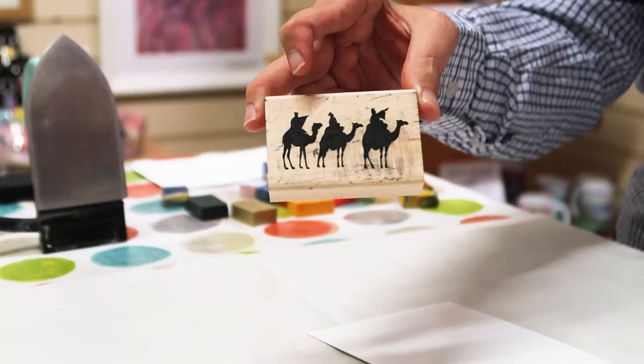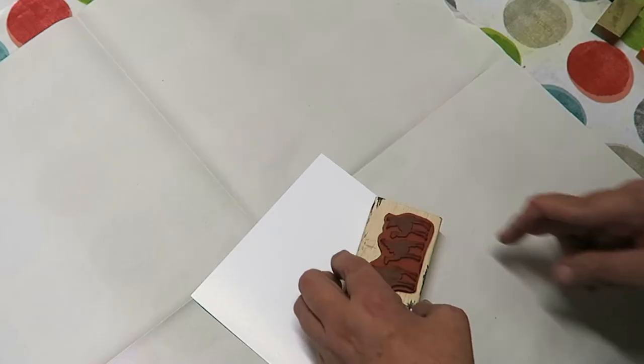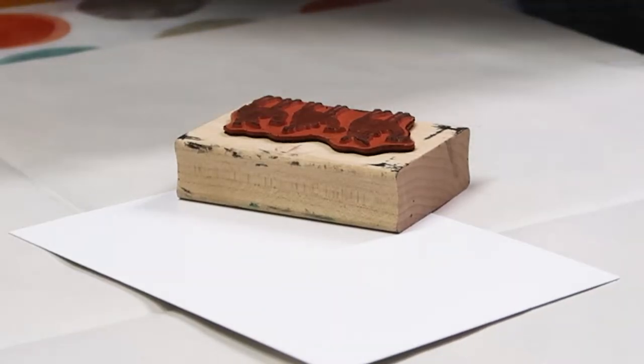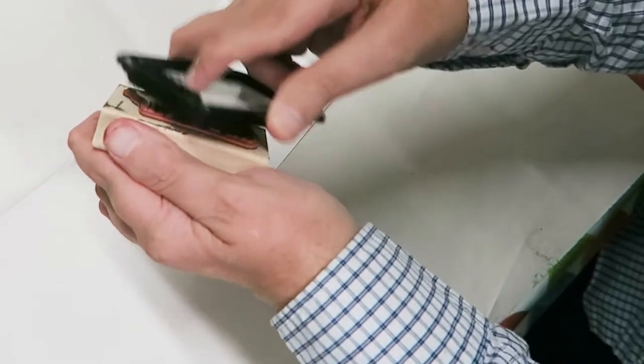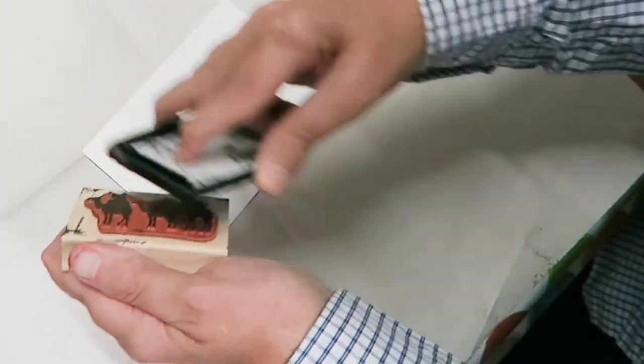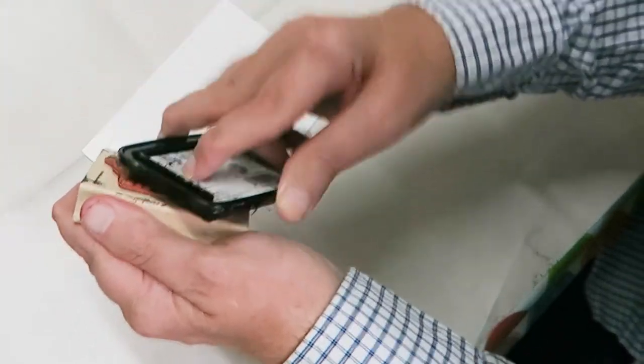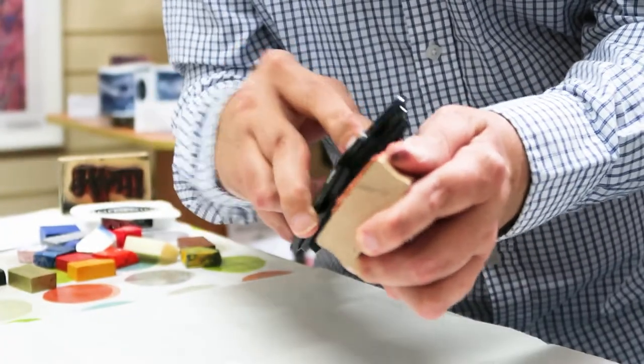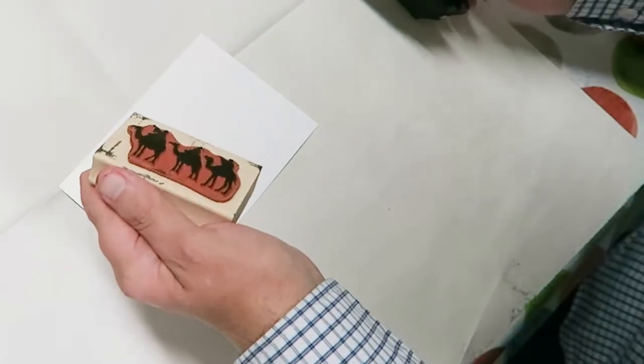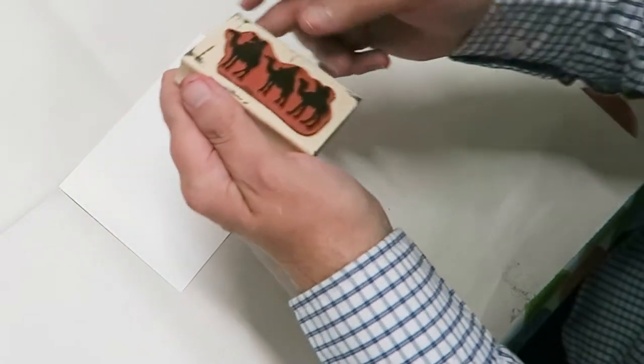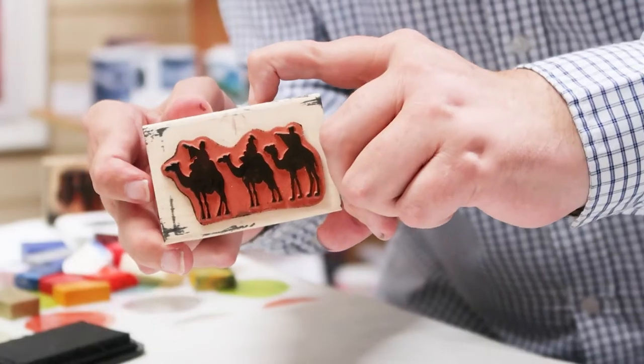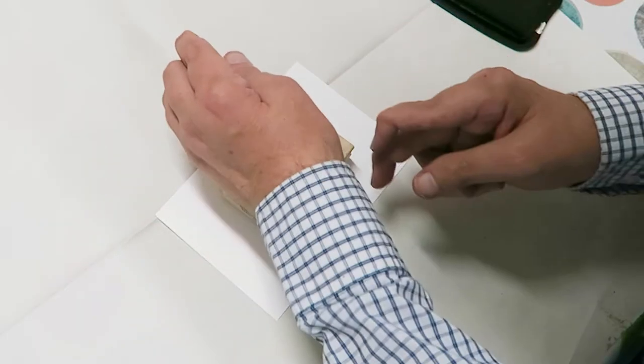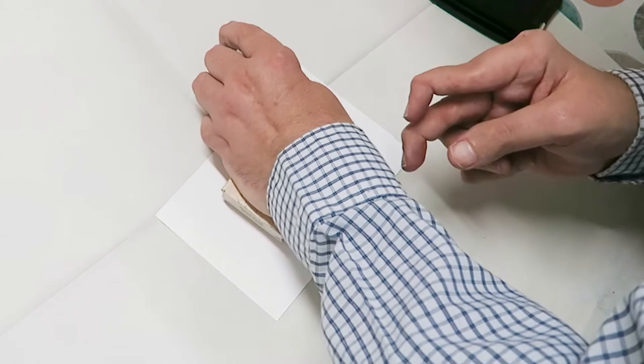We take some ink. When the stamp is quite new like this one, you can tell quite easily if you've covered it. Place it where you want it, push down.